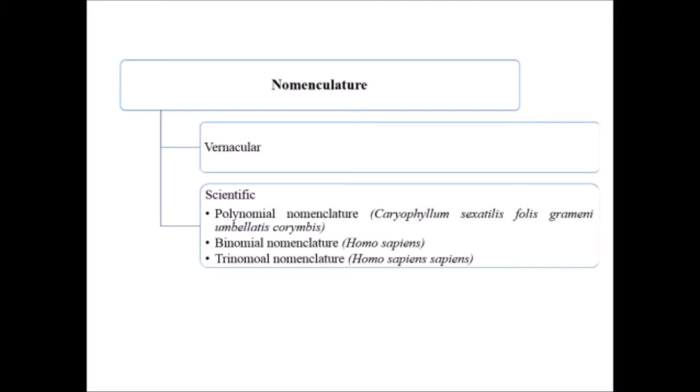So let's see what is nomenclature actually. We have two ways of nomenclature of anything: one is the vernacular and the other is the scientific. We provide a common name - vernacular is the common name of an organism which we use in day-to-day life.